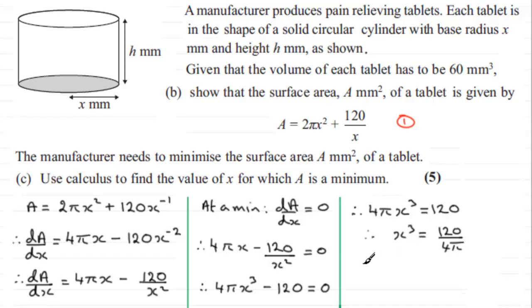And then to get x, therefore x would equal the cube root of 120 over 4π. Or you could reduce this down to 1. You could cancel the 4 into the 120. That goes 30 times. And go for the cube root of 30 over π.